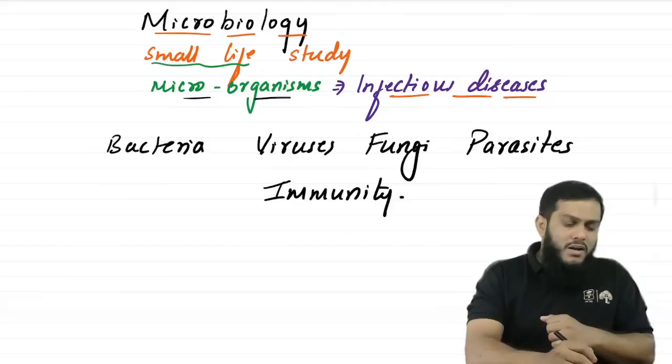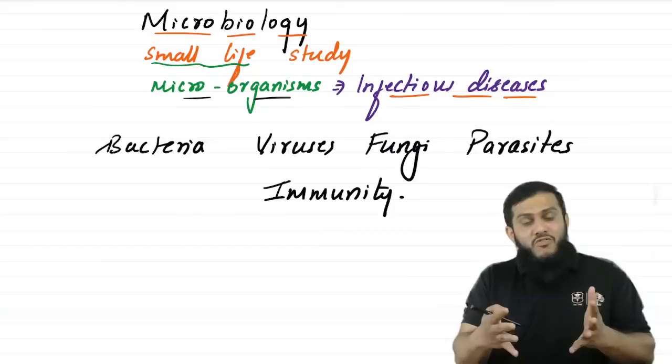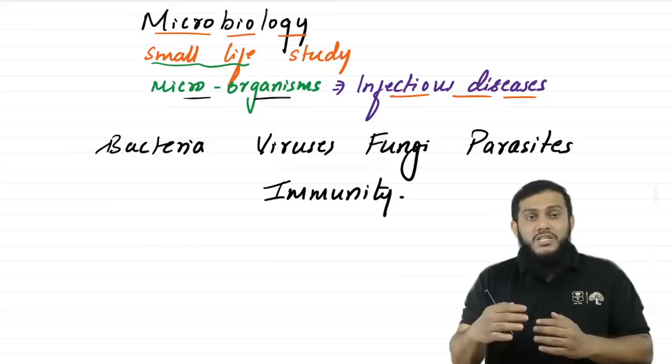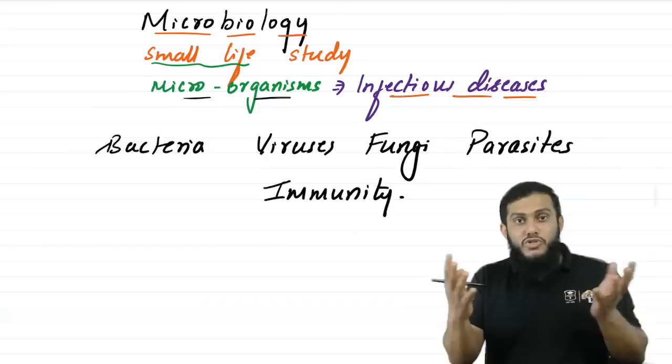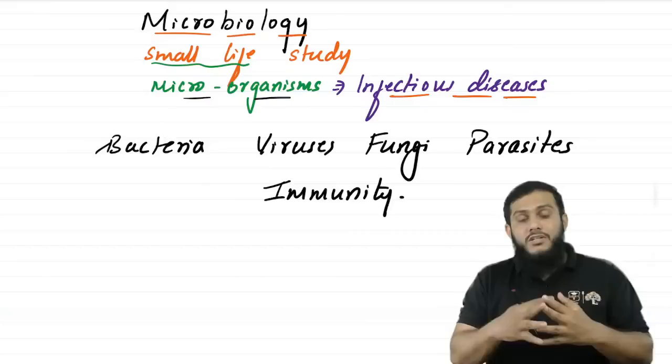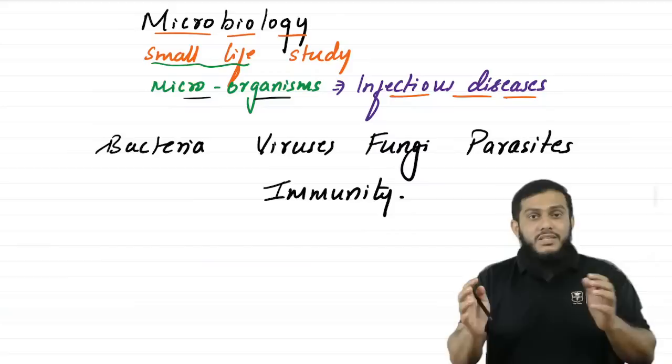Earlier we used to study all bacteria in one place, all viruses in one place, fungi and parasites in one place. Nowadays the pattern has changed in university exams. Second-year students are in the CBME pattern, studying system-wise: CNS, cardiovascular system, respiratory system, gastrointestinal, genitourinary, musculoskeletal — they study system-wise.